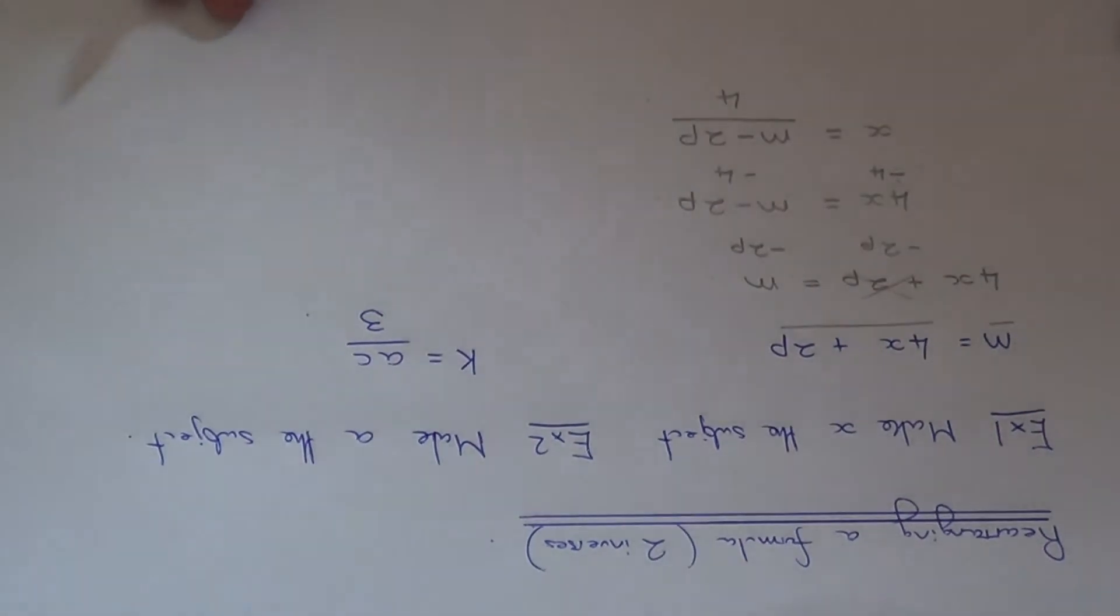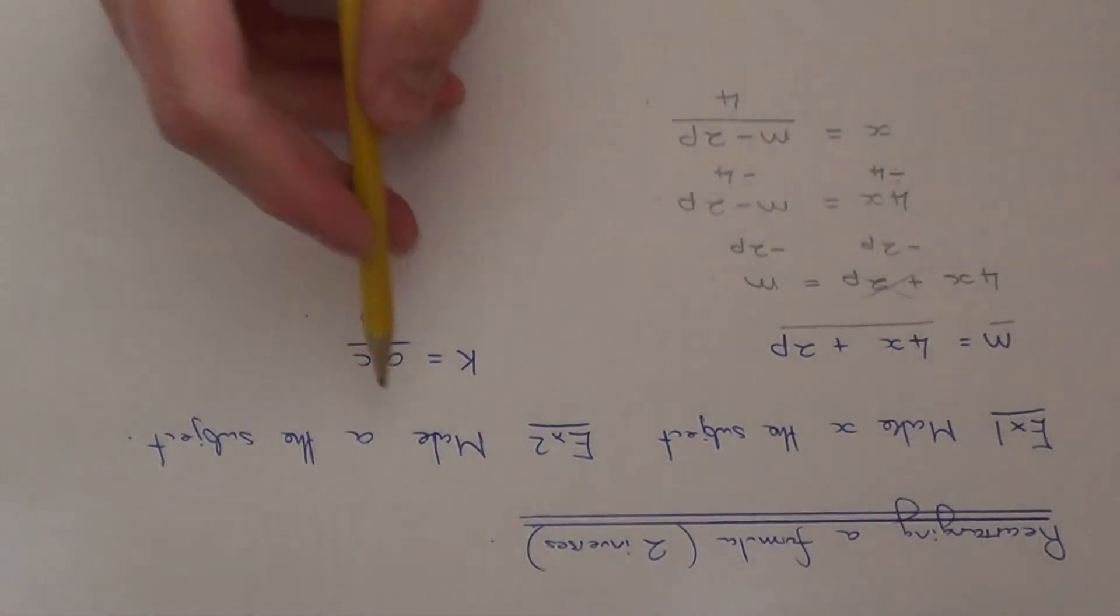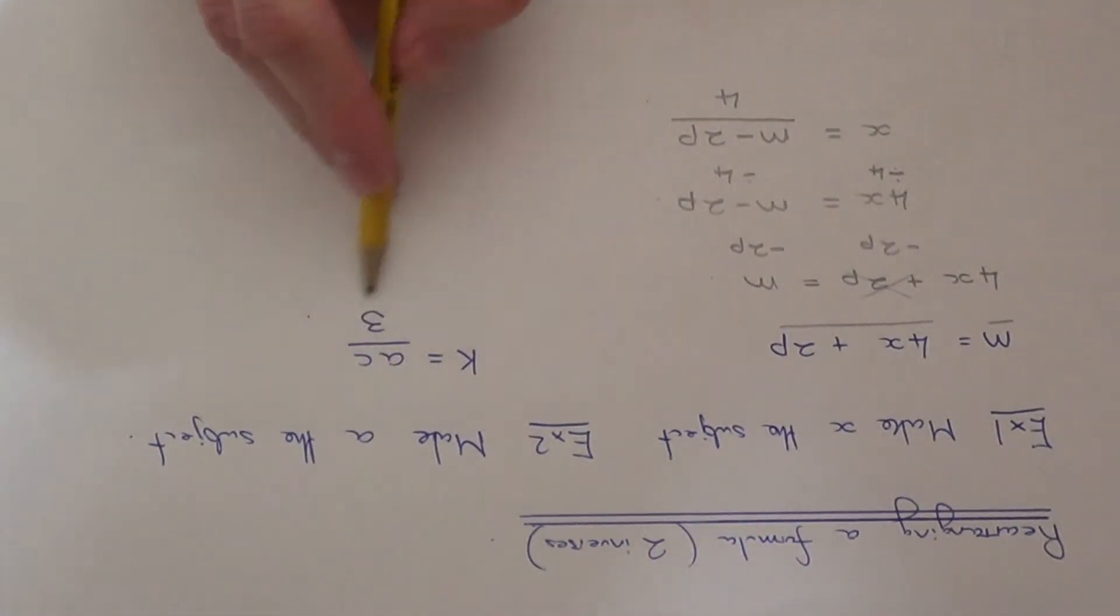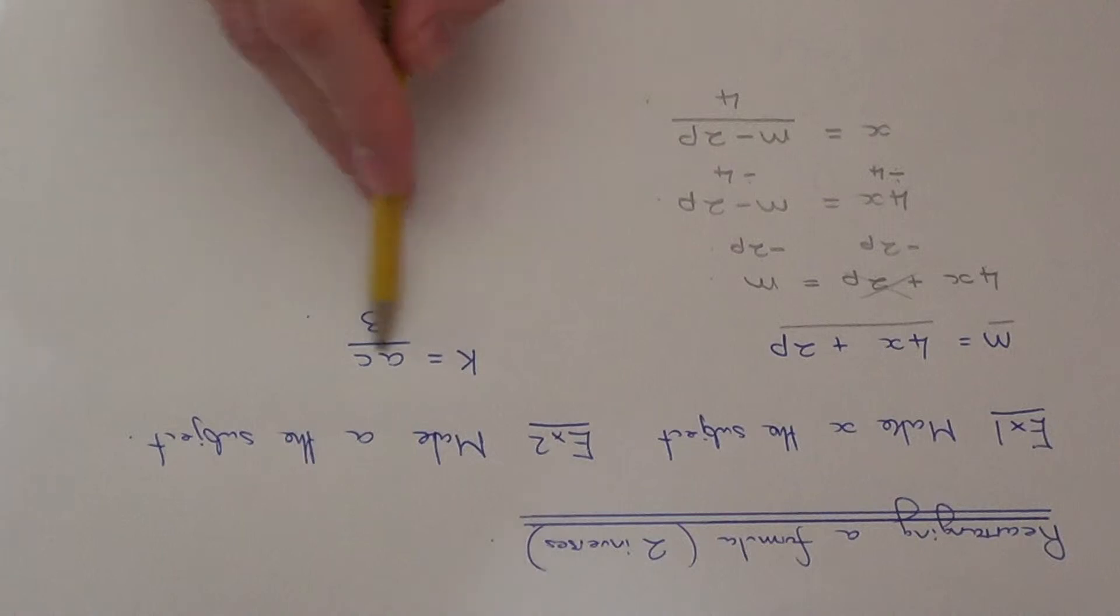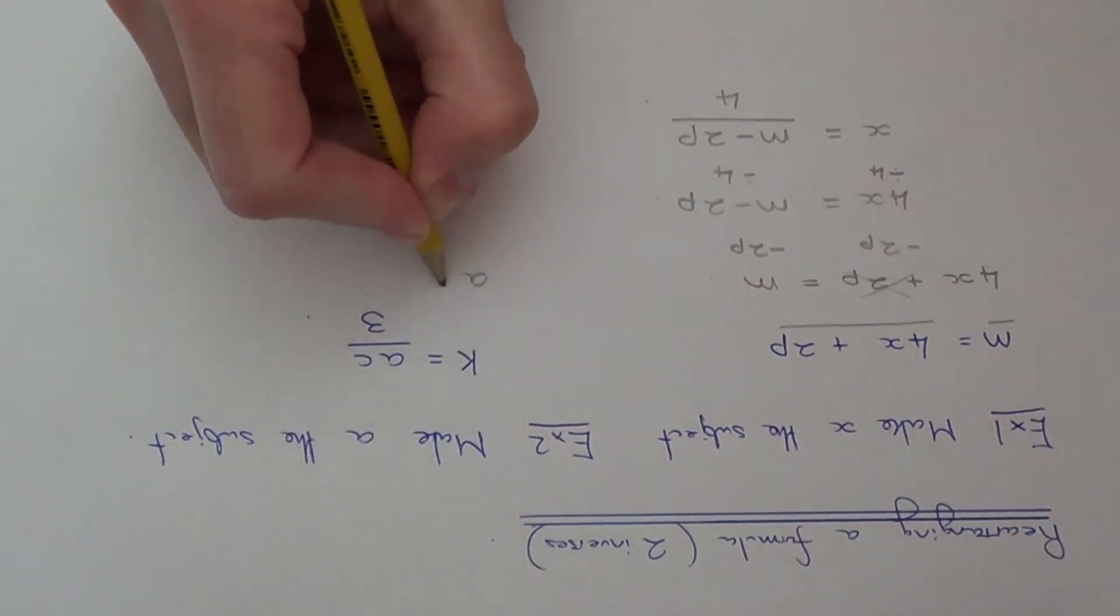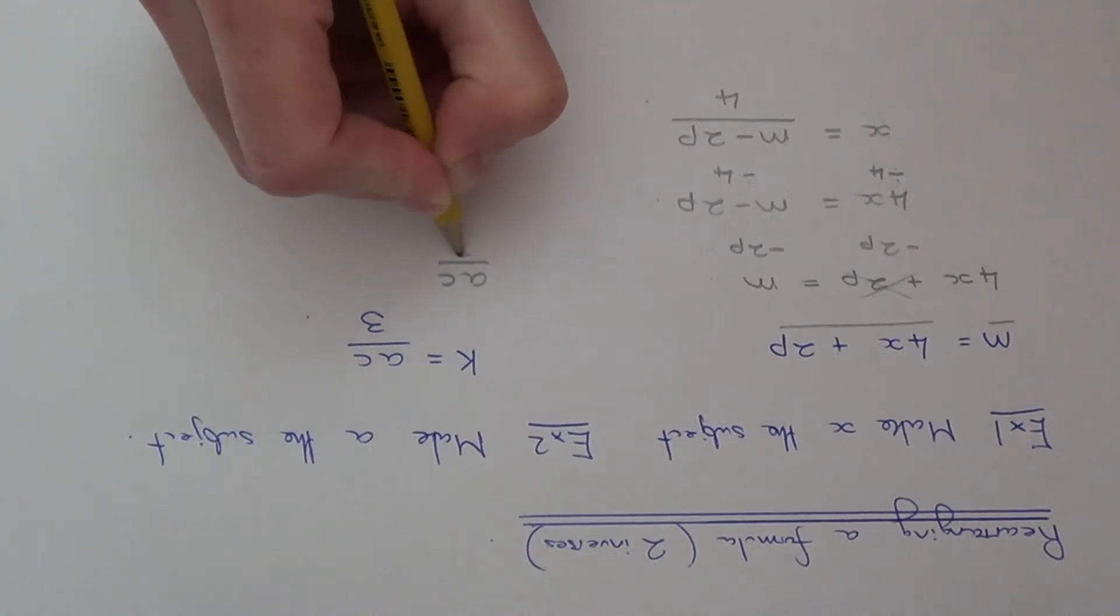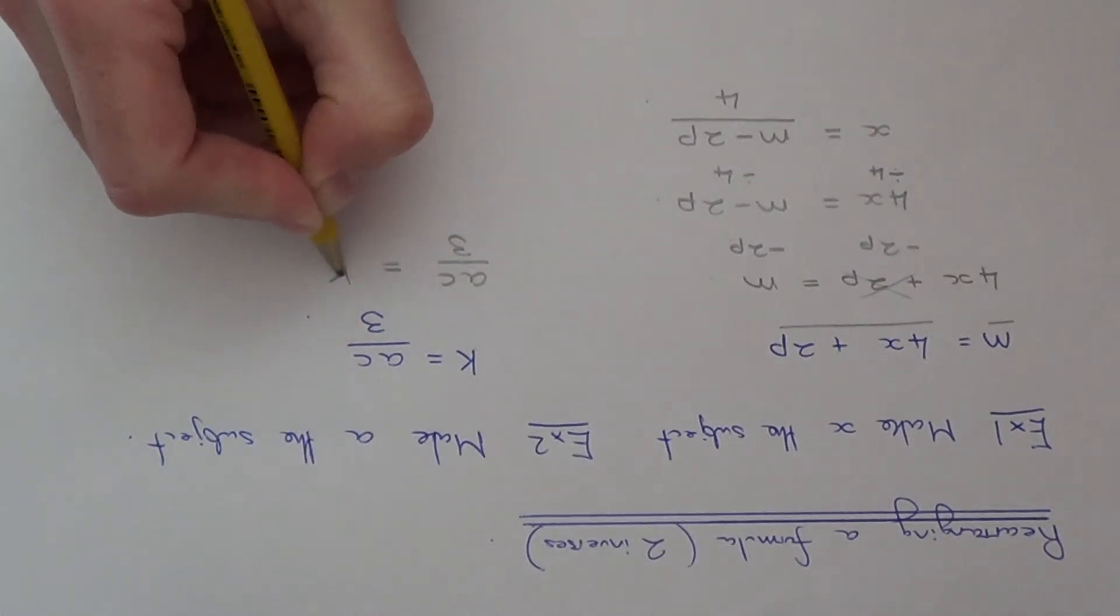Let's move on to example 2. This time we need to make a the subject of the formula k equals ac over 3. Again, swap the left hand side and the right hand side around, so we'll rewrite it as ac over 3 equals k.